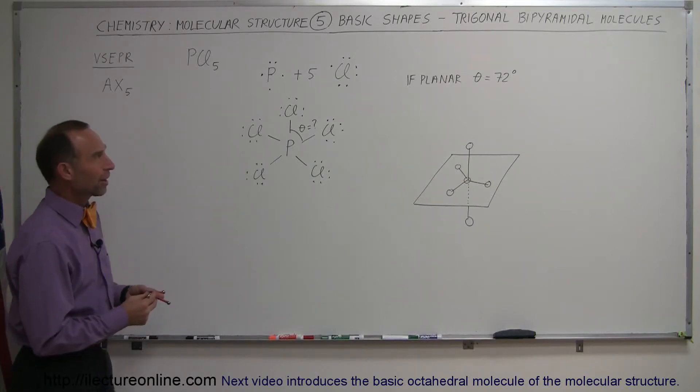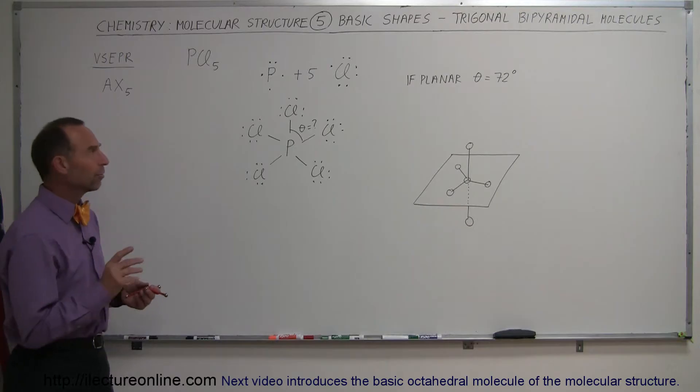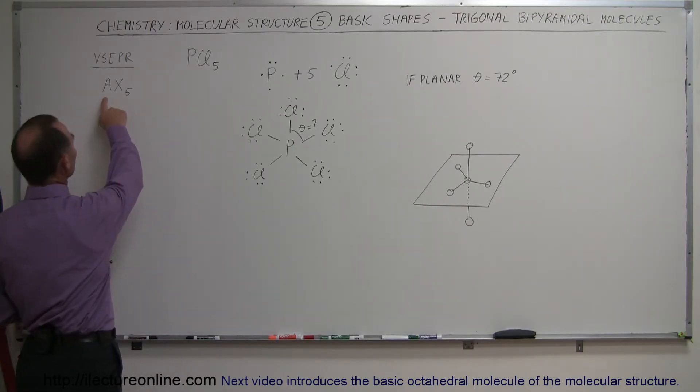Here's our next shape, it's called the trigonal bipyramidal molecule, and that is a molecule that is formed when we have one central molecule and five appendages, so to speak.